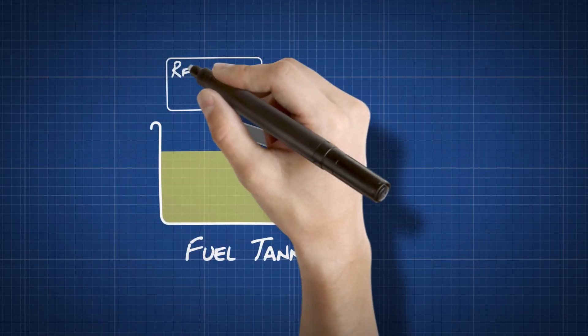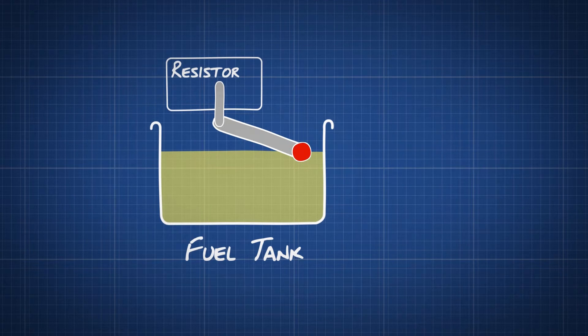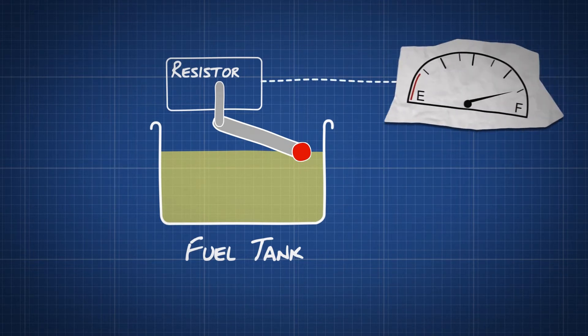The float is attached to a thin metal rod that scrapes up against a resistor. This resistor sends an electronic signal to the fuel display.